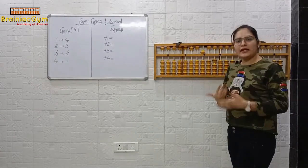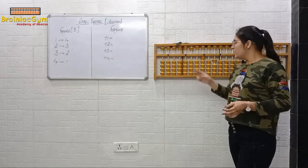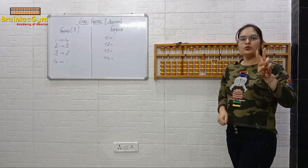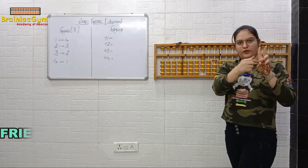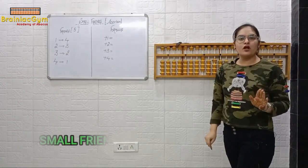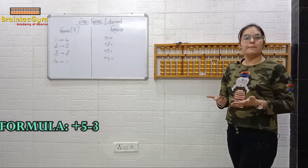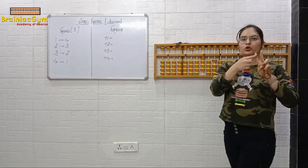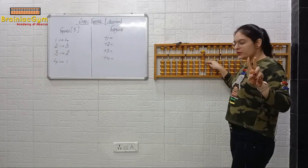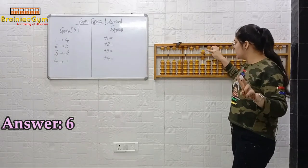Place four again on your abacus. Now we have to do plus two. Friend of two: one, two, three — friend of two is three. You can see there as well, friend of two is three. Total small friends is five, so the formula will be plus five minus three. Minus one, minus two, minus three — answer is six.